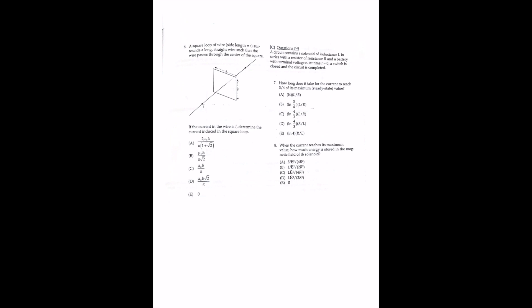For question 6, a square loop of wire with side length S surrounds a long straight wire carrying steady current I through the center of the square. Because the current in the straight wire is steady, there is no change in the magnetic field, no change in magnetic flux, and therefore no induced EMF or current. The answer is E.